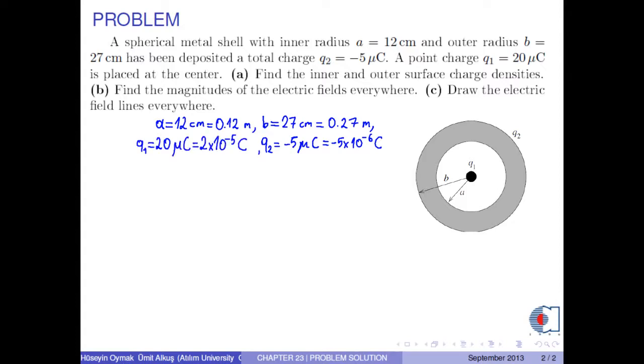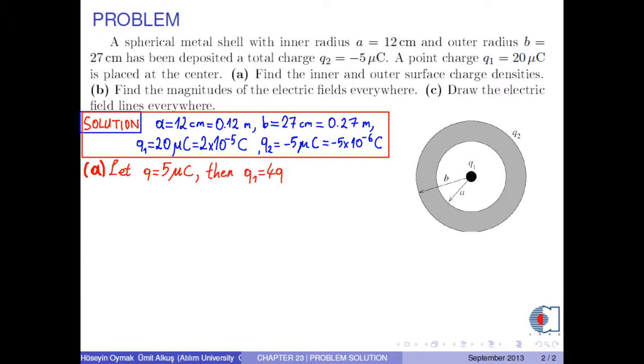Part A: Find the inner and outer surface charge densities. For symbolic calculations, let Q equals 5 microcoulombs, then Q1 becomes 4Q and Q2 becomes negative Q.